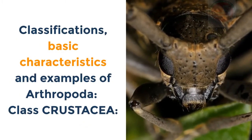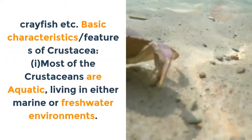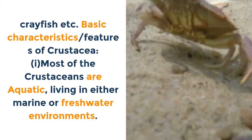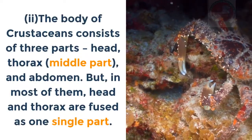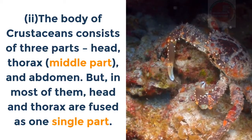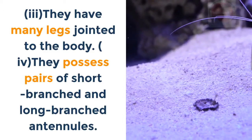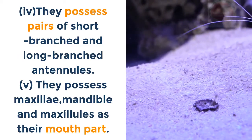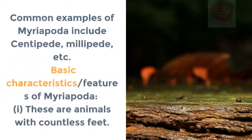Class Crustacea: common examples include crab, shrimps, lobsters, prawn, barnacles, crayfish, etc. Basic characteristics: i. Most crustaceans are aquatic — marine or freshwater — though a few have adapted to land, e.g. woodlice. ii. The body has three parts — head, thorax and abdomen — but in most, head and thorax are fused. iii. They have many jointed legs. iv. They possess pairs of short-branched antennules and long-branched antennae. v. They possess maxillae, mandibles and maxillules as mouth parts.